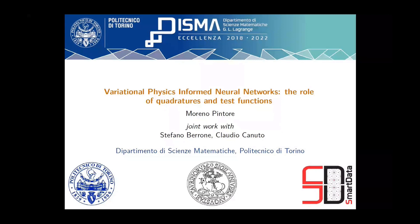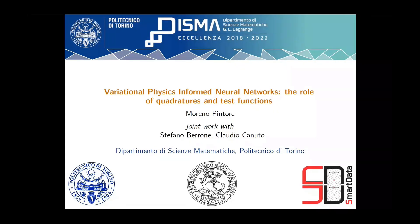Thank you for the introduction. As Francesco said, I'm a PhD student at Politecnico di Torino, and today we present a work done in collaboration with my supervisors, Professor Stefano Berrone and Claudio Canuto. The main topic is an a priori error estimate for variational physics-informed neural networks. In particular, these error estimates will be based on the order of the quadrature rules and of the test functions involved in the construction of the loss function.